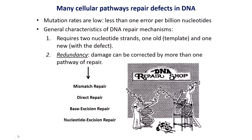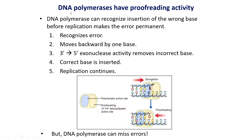Before we talk about these types of DNA repair mechanisms, it's important to note that DNA polymerase itself — the enzyme that replicates DNA — actually has the ability to correct its errors. DNA polymerase can recognize when it inserts an incorrect base before repeated rounds of DNA replication make the error permanent. If this error can be caught before the DNA is replicated a second time, the mutation will not occur. DNA polymerase has two different active sites: one where we're inserting a DNA nucleotide and creating a phosphodiester bond, and one where we are removing a nucleotide and breaking a phosphodiester bond. So it's a bifunctional enzyme with two different active sites.